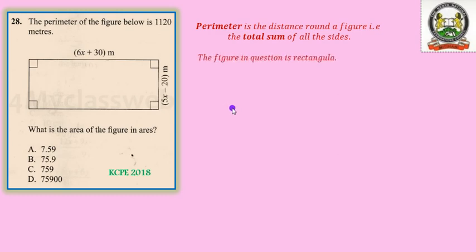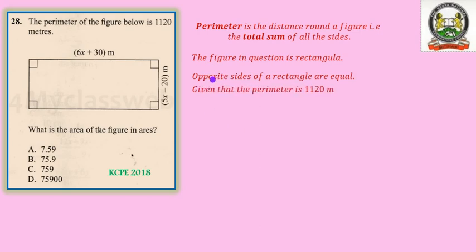Now the figure that we have in question is rectangular. It is a rectangle, and one of the properties of a rectangle is that opposite sides of a rectangle are equal. This side is opposite to this side and they are equal. This one and the other one is opposite to each other and the two lines are equal. Bearing that in mind, then we shall be able to come up with the answer.